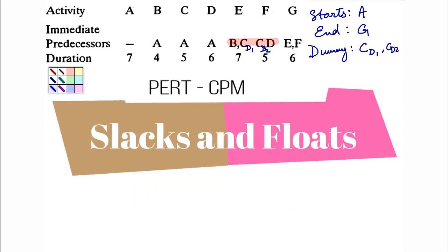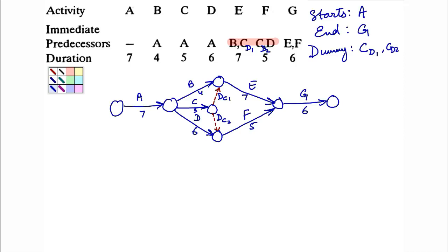What is the procedure that we follow? First, you need to find out all possible paths from the first event to the last event — from the start of the project to the end of the project. How many paths are there? A, B, E, G.